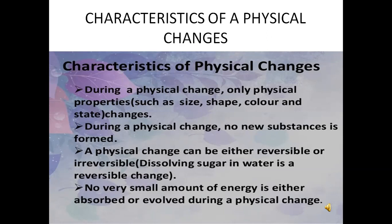For example, when water is heated, water vapors are formed. Once water vapors are cooled, water can be obtained again. In a physical change, the chemical properties of a substance do not change. For example, when a piece of gold is melted, its chemical composition remains the same in both the solid form and the liquid form.